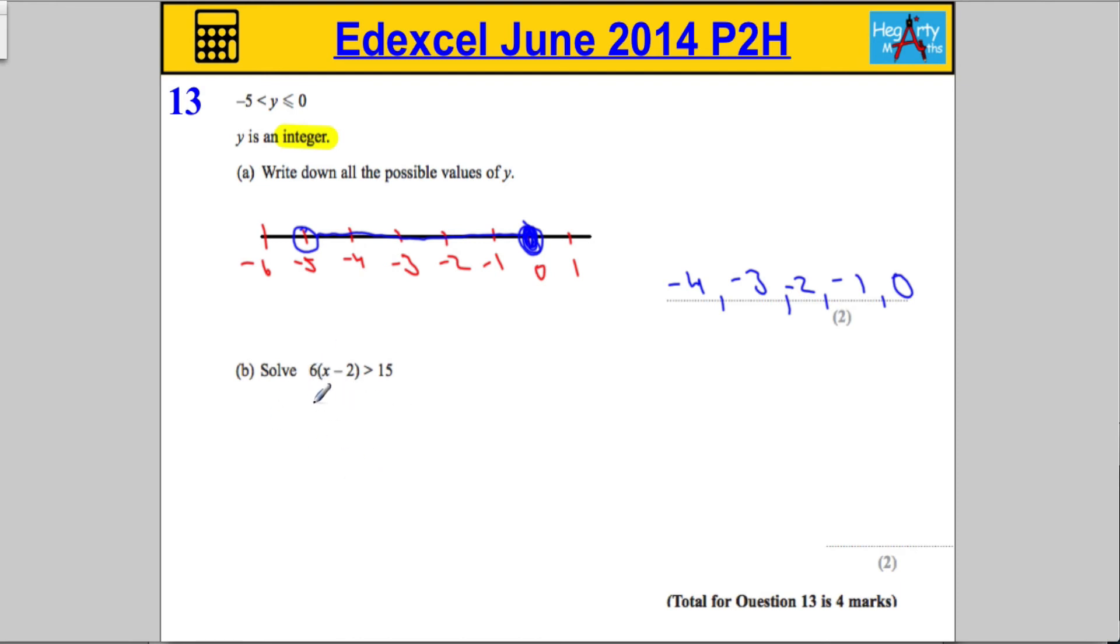We're going to start by expanding the bracket to get 6x minus 12. And instead of putting equals, we're just going to say, well, it's got to be greater than 15. Next thing we're going to do is add 12 to both sides. So, we get 6x is going to be greater than 15 plus 12 is 27.